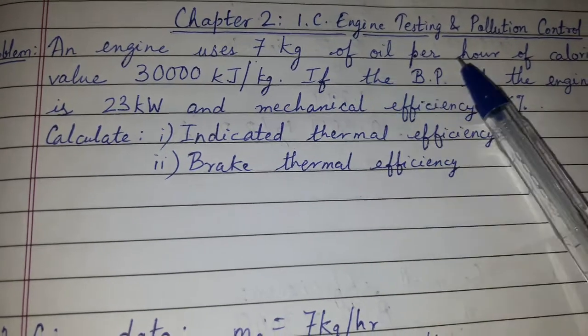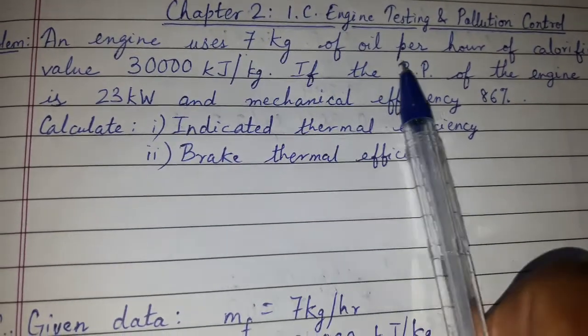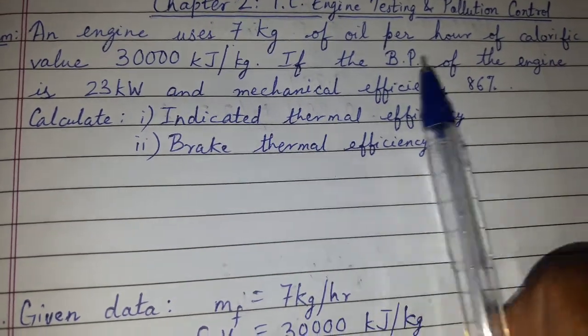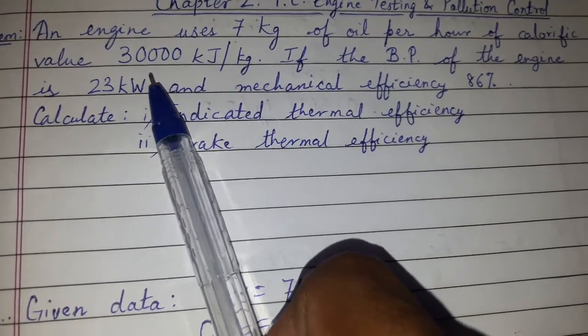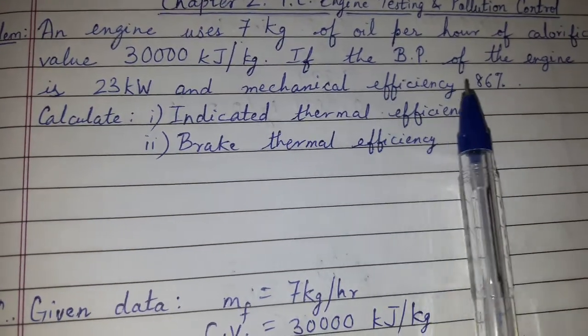An engine uses 7 kg of oil per hour—that's the mass flow rate MF. Calorific value C or CV is given as 30,000 kJ/kg.